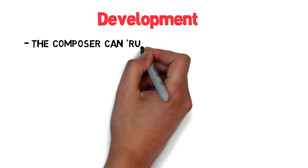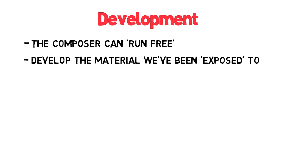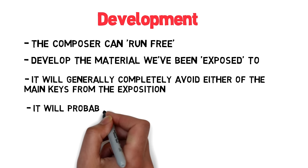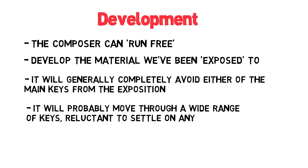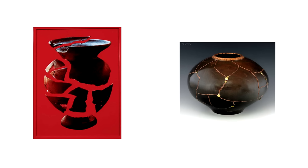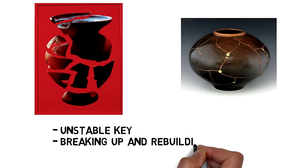Next comes the development, and this is a point of major interest in the piece, where the composer can run free and do crazy and creative things with their ideas. The point is to develop the material we've already been exposed to. Importantly, it will generally completely avoid going into either of the main keys we heard in the exposition — instead, it'll probably go through a wide range of keys and be reluctant to settle on any of them. Apart from this, there are no real rules for the development section, and different composers will do things very differently. If the exposition is more clearly structured, the development allows things to be more chaotic and unstructured. One thing you'll generally find is that the themes will be broken up and then rebuilt or recombined to make new phrases or sequences. Here's a clip from Mozart's development — listen to how it's constantly changing key, reluctant to settle in any, and how it's breaking up and rebuilding the material we heard from the exposition.